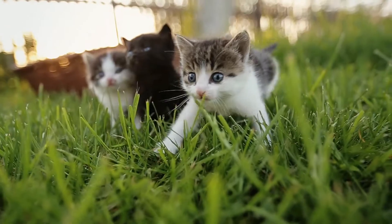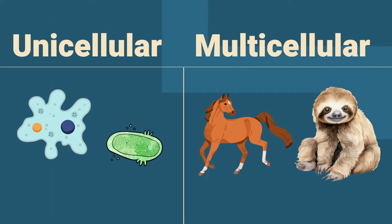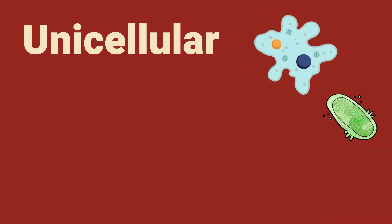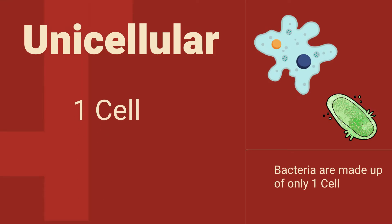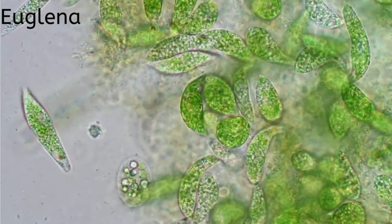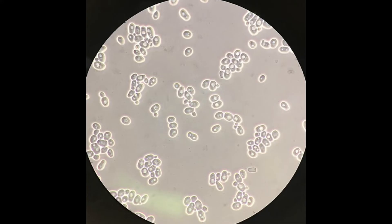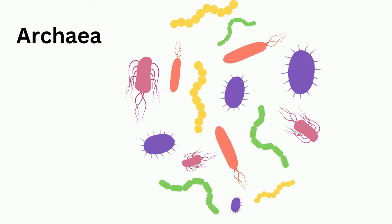Living organisms can be unicellular or multicellular. Unicellular organisms are made up of only one cell. Examples include some protists, bacteria, some fungi like yeast, and cells from the kingdom Archaea.